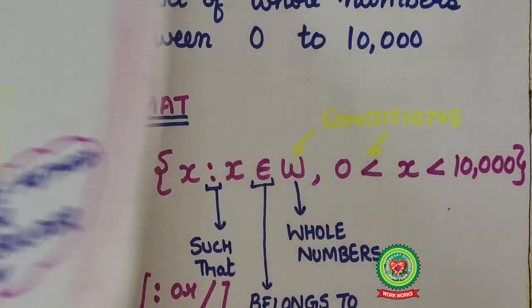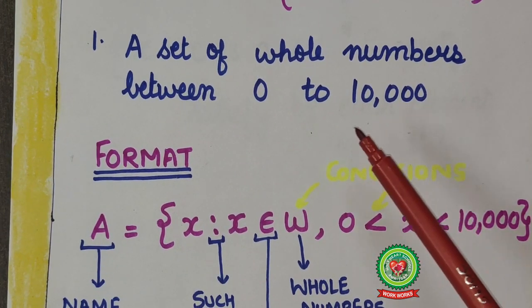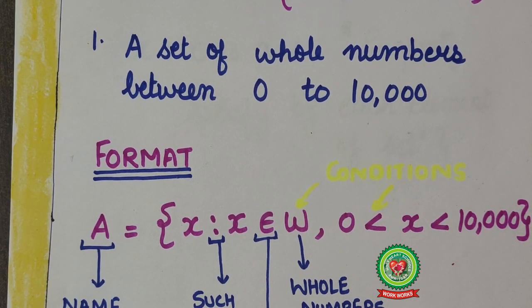What happens if I ask you to form a set of whole numbers between zero to ten thousand? Can we use roster method to list all these whole numbers? No, it is impractical and time consuming. So we will write it using set builder form.